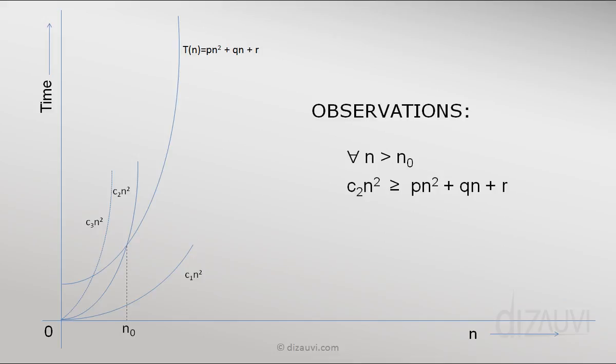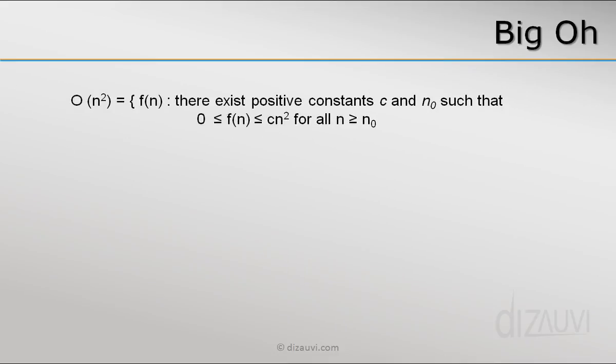So we need a new definition to be precise. Mathematics is about defining things precisely and without ambiguity. So we define what is known as the Big O of a function. And listen carefully. Pause the video later and try to understand what we mean by it.